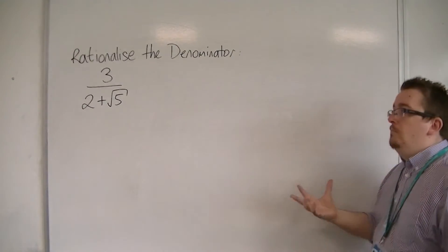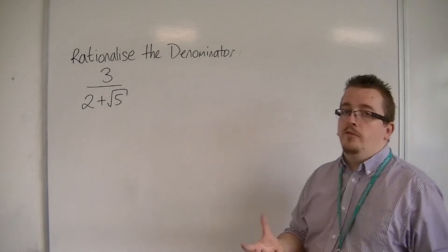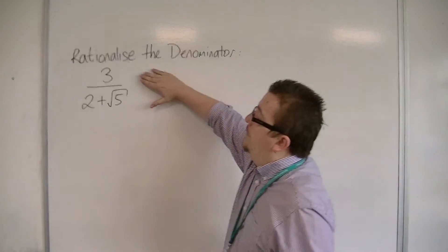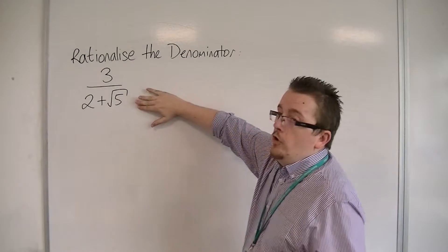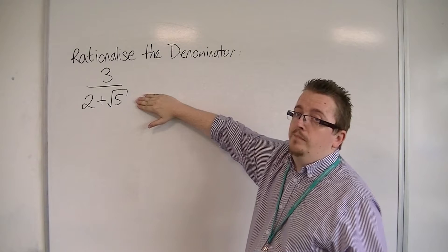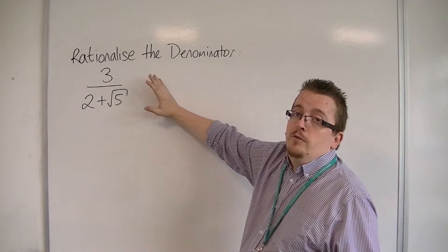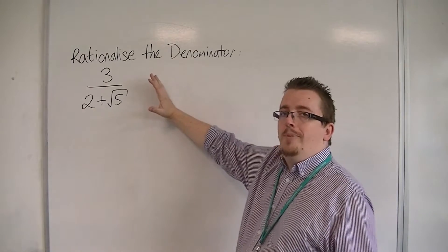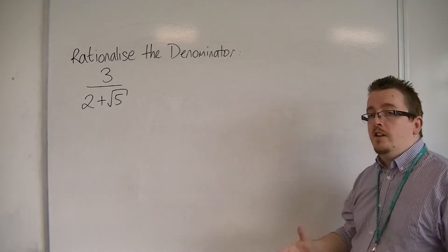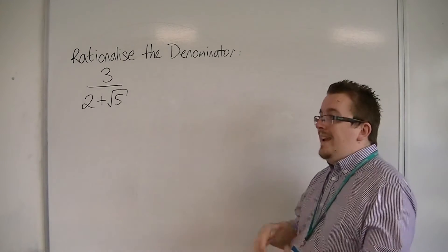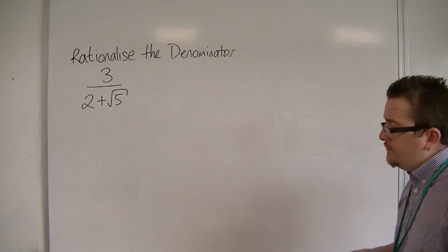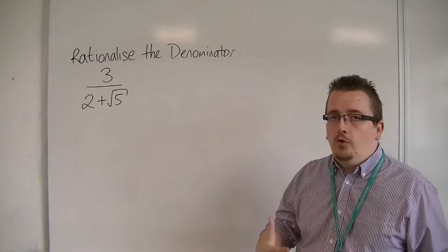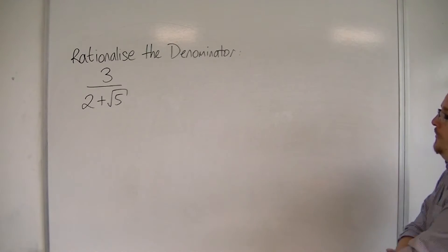I can't just multiply top and bottom by root 5. If you did do that, you would get 3 root 5 on the top, and then you would get 2 root 5 plus 5 on the bottom. You'd get exactly the same valued fraction, nothing would have changed, but there is still a root in the denominator. So it doesn't work. We've got to find a slightly different technique in order to rationalize the denominator for this.